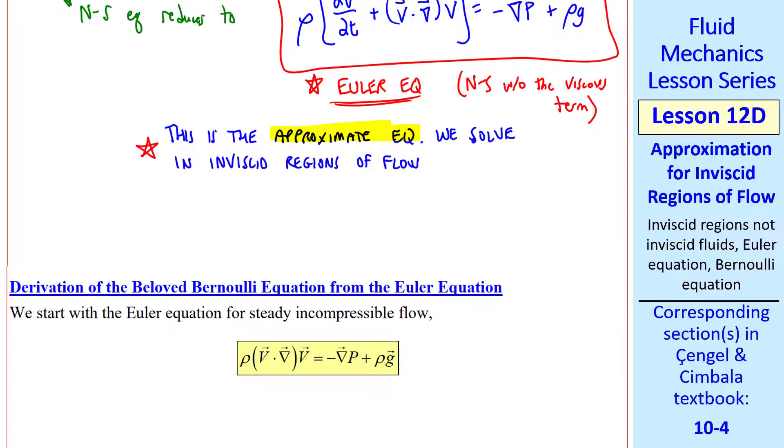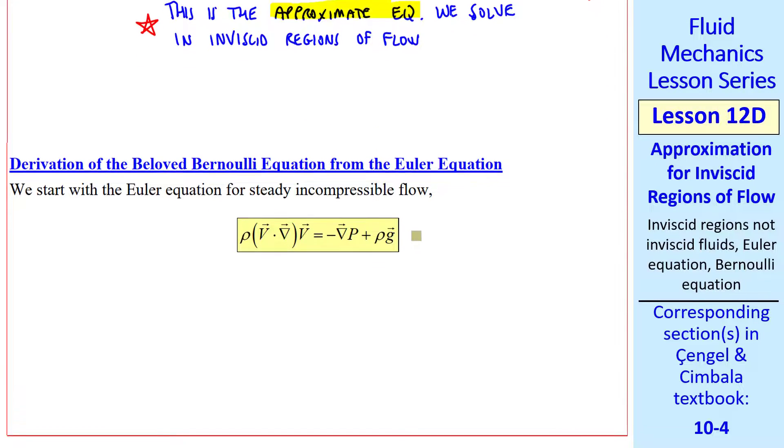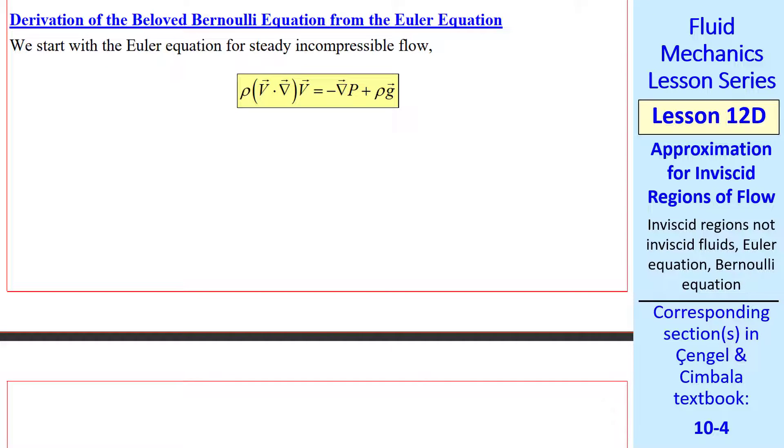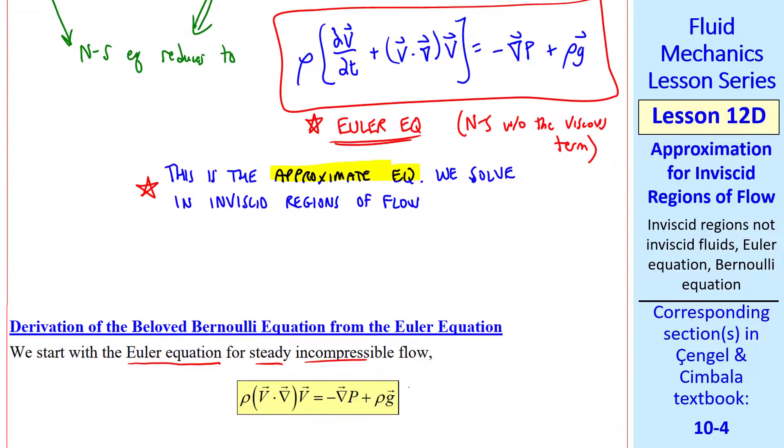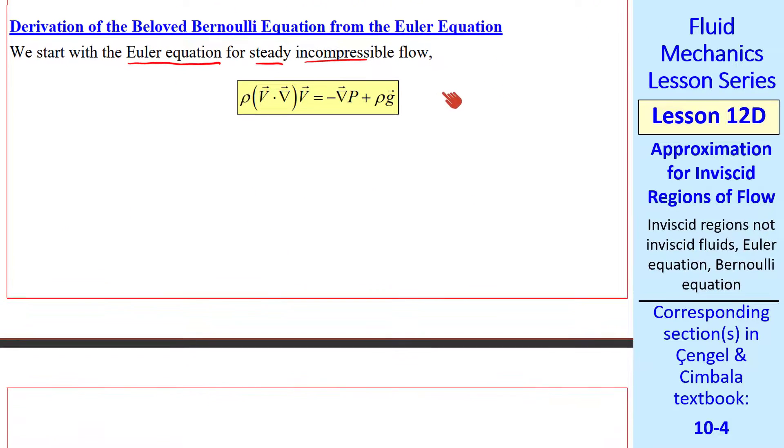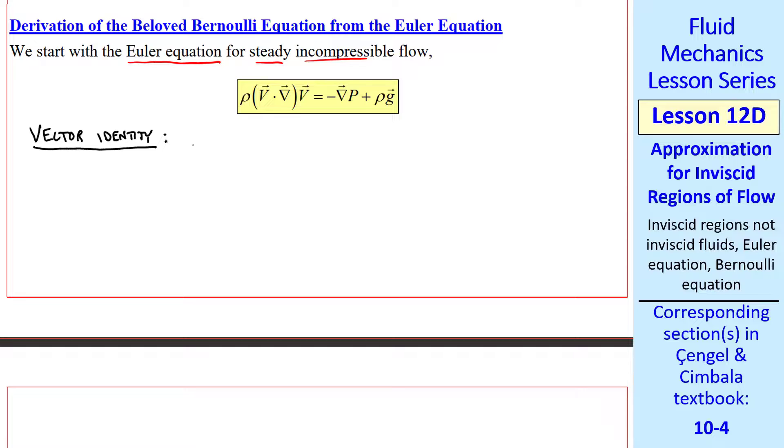Now I'll show you how you can derive the beloved Bernoulli equation from the Euler equation. We had derived the beloved Bernoulli equation in a previous lesson. Now we'll do it a different way. We start with the Euler equation for steady incompressible flow. It's the same equation I just wrote out up here, but without the unsteady term. Now recall a vector identity that you may or may not remember from math class. For any vector v, v dot del v is equal to del of v squared over 2 minus v cross del cross v.